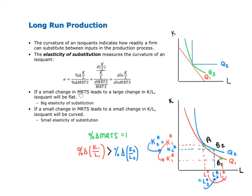When there's a small percentage change in the MRTS that leads to a larger percentage change in the capital-to-labor ratio, the isoquants are relatively flat and the elasticity of substitution is relatively big. Remember the extreme of perfect substitutes — here the isoquant is as flat as it can get because it's linear, and input substitutability is as high as it can be. When a small percentage change in the MRTS leads to a small change in the capital-to-labor ratio, the isoquant is more curvy and the elasticity of substitution is relatively small. Again, at the extreme of fixed proportion inputs, the isoquant is as curvy as it can be, and the elasticity of substitution measuring input substitutability is as low as it can be.